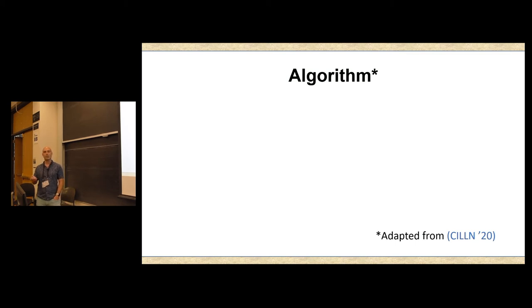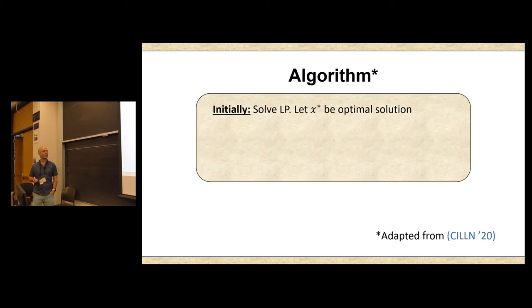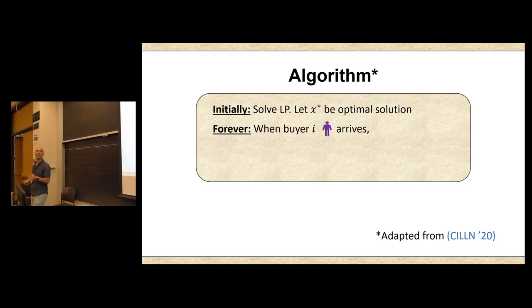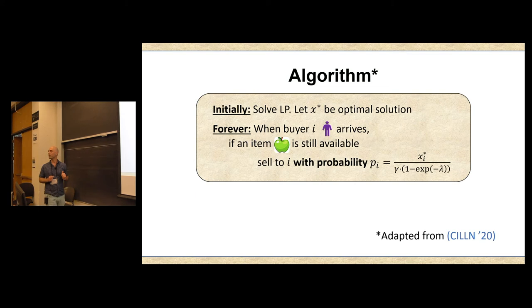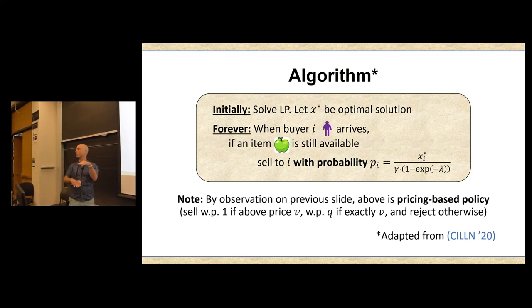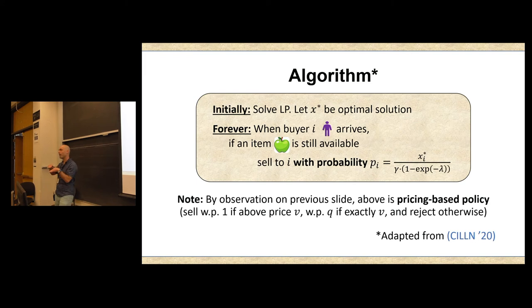So here's our algorithm adapted from the work of Colina et al. Fairly natural. Here's how it works. Step number one, solve our linear program from the previous slide. Let x star be our optimal solution. And now forever and ever, whenever a buyer i arrives, you check to see if there's an available item. And if there is, you sell with probability pi, which is precisely this value from the previous slide. So x over gamma times 1 minus e to the minus lambda. So by the observation on the previous slide, this is precisely a pricing-based policy. Above some threshold, I sell with probability 1. Below this threshold, I sell with probability 0. And this middling value, I'll do something in between.